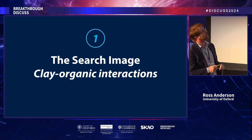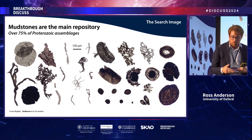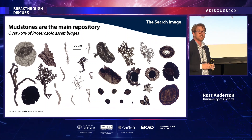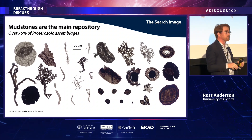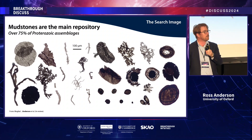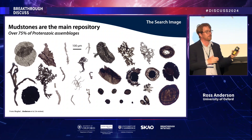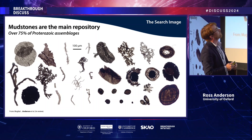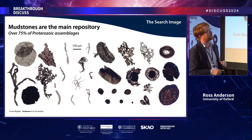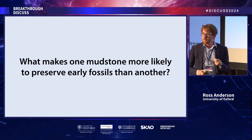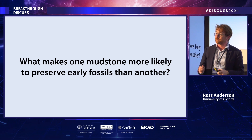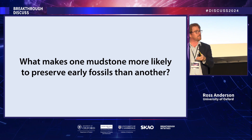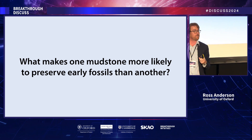We'll begin with clay-organic interactions. If we think about where we find early fossils, the most common repository on Earth — 75% of assemblages with early fossils — come from rocks between 2.5 and 0.5 billion years old, and those rocks are mudstones. We know mudstones are a really common rock type across the Earth's surface, so we need to know what makes one mudstone more likely to preserve a fossil than another. It's like looking for tiny needles in a very big haystack.